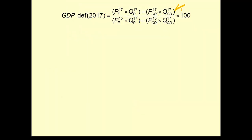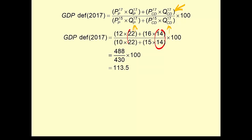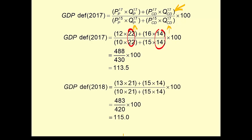For 2017, it's the nominal GDP for 2017 — prices and quantities for 2017 — divided by the 2017 quantities valued at 2015 base year prices. We can see the quantities change from the 2016 index. Doing the calculation gives us 113.5. For 2018, we use 2018 quantities with base year prices in the denominator, giving a GDP deflator of 115.